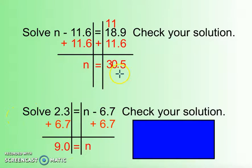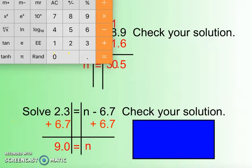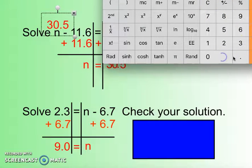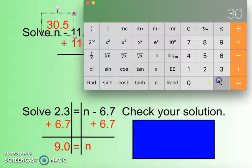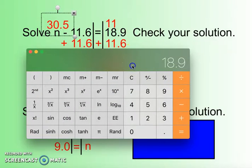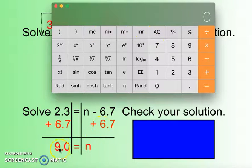And I can check these solutions. I can take 30.5 and plug it in for n. And if I take 30.5 minus 11.6, I should get 18.9. And I get 18.9, and that's my original number, so the solution works. How about below? So let's put our answer of 9 in for n right here. So it would be 9 minus 6.7. That should equal 2.3, and it does.